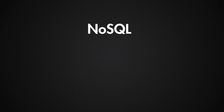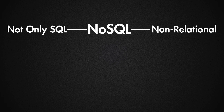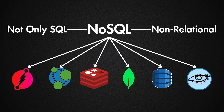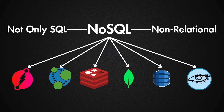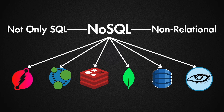NoSQL, often referred to as not only SQL or non-relational databases, store data differently than traditional relational databases. They use different data models, including documents, key-value stores, wide column stores, and graphs. This flexibility makes them a good fit for large and unstructured datasets, or situations where data structures evolve rapidly.